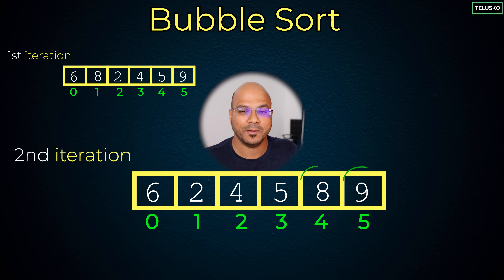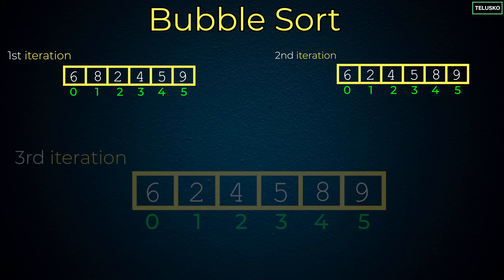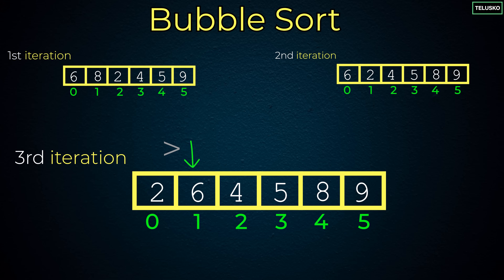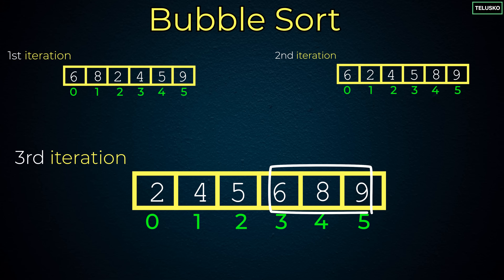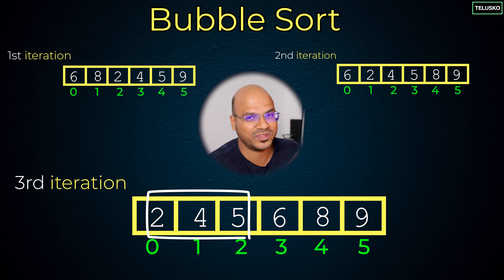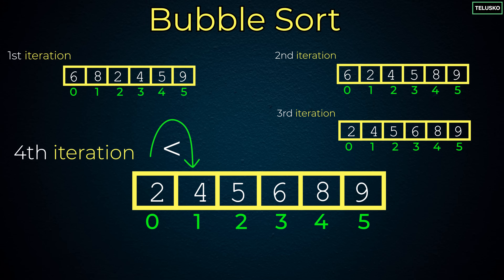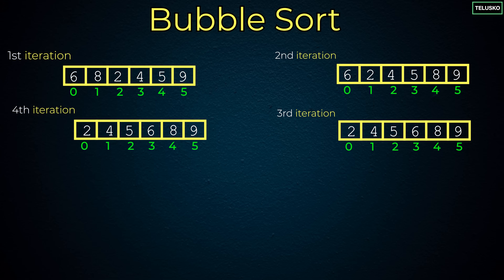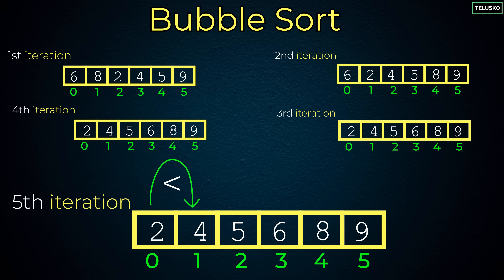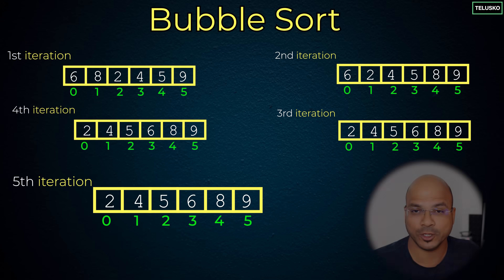We know 8 and 9 are sorted, but the other values are not. So we repeat: 6 is greater than 2, swap. 6 is greater than 4, swap. 6 is greater than 5, swap. After this iteration, we have 6, 8, 9 sorted at the end. But the algorithm has no idea the remaining values are sorted — it goes from start to end and keeps checking. It will compare, confirm no swaps needed, and work through until 2 and 4 are also confirmed, giving us the fully sorted array.